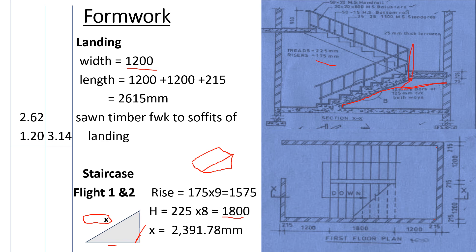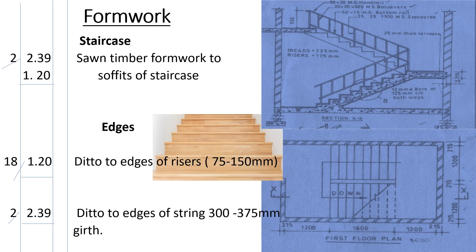The width of the tread is 1200 millimeters — from this point to this point is 1200. We only need one width measurement. Booking in square meters: 2.93 (the hypotenuse length) multiplied by 1.2 (the tread width), multiplied by 2 (for both flights). We describe this as: sawn timber formwork to the soffit of the staircase.